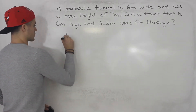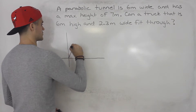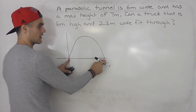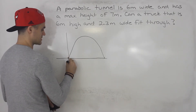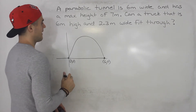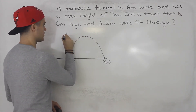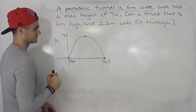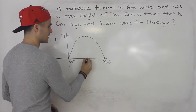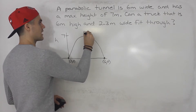Let's draw a diagram for this. We have a parabolic tunnel — let's draw this tunnel here that is six meters wide. The distance from this edge to this edge is six meters. So this point here is (0, 0) and this point here is (6, 0). This tunnel has a max height of seven, so at the vertex right in the middle the height is seven. Since we know the intercepts, the vertex happens right in the middle: (0 + 6) / 2 = 3. So we know that this point here is (3, 7).